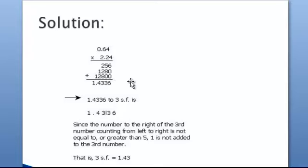The multiplication gives us 1.4336, and we're supposed to find this to 3 significant figures. To do this, count 3 places in the number from left to right: 1, 2, 3.